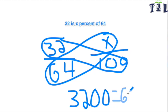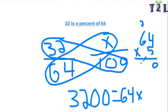So what you want to find is a number that goes into 3200 that's a multiple of 64, and 64 times 5 is equal to 320, so you're going to add a multiple of 10 to get that equal to 3200. So 32 is 50% of 64.